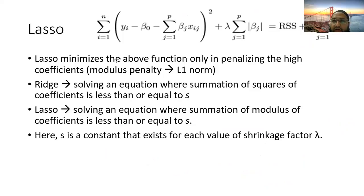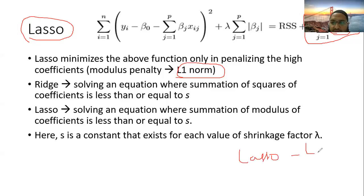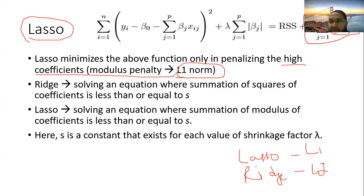Now we move to the other regularization technique, which is called lasso. Lasso is primarily named after the regularization quantity. What is different from the ridge case is that we sum the modulus of the coefficients rather than the squares, multiplied by lambda. This is called the L1 norm in statistics, and therefore lasso is also called L1 regularization. In ridge we use the square of the coefficients — the L2 norm. In lasso we use the modulus — the L1 norm.